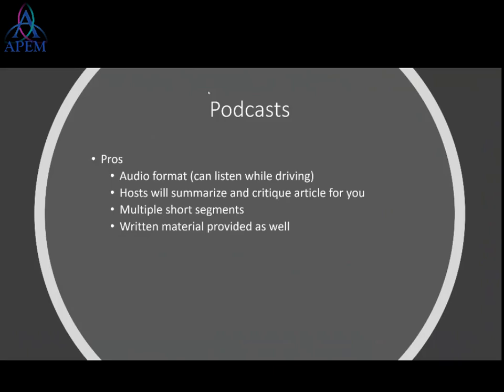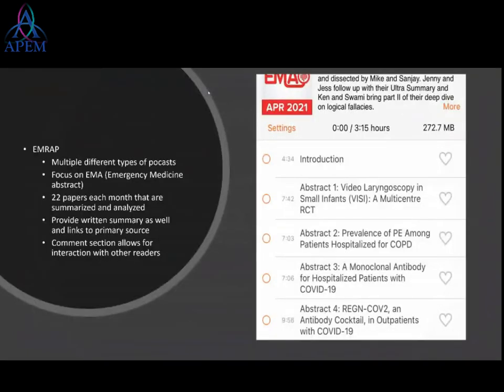They'll also provide links to written material if you'd rather read the summary than listen. The example I'll use is a podcast called MRAP. It's a $500-per-year subscription for attendings. Specifically, their Emergency Medicine Abstracts portion takes 22 recently published emergency medicine papers each month, summarizes them, and discusses them. Each episode is about seven minutes long and covers what the article shows, plus discussion, a link to the journal article, and a written summary.